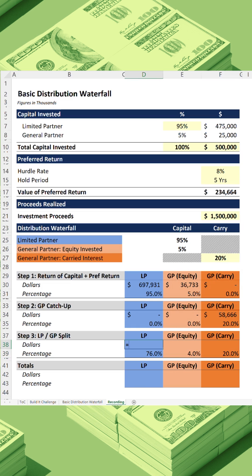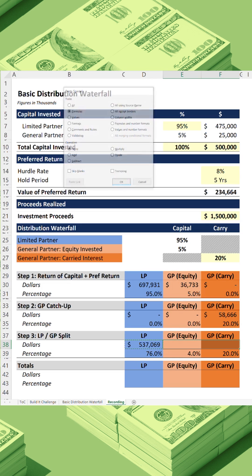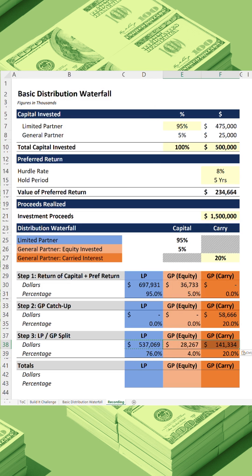What we've effectively done is dilute the investors by the amount of the carry, which we fill in here. To calculate dollars, we take the proceeds remaining, subtract all distributions made to date — and we do that for both steps — then multiply by the percentage below. Copy the formula across, and now we've completed step three. The last step just involves summing everything up.